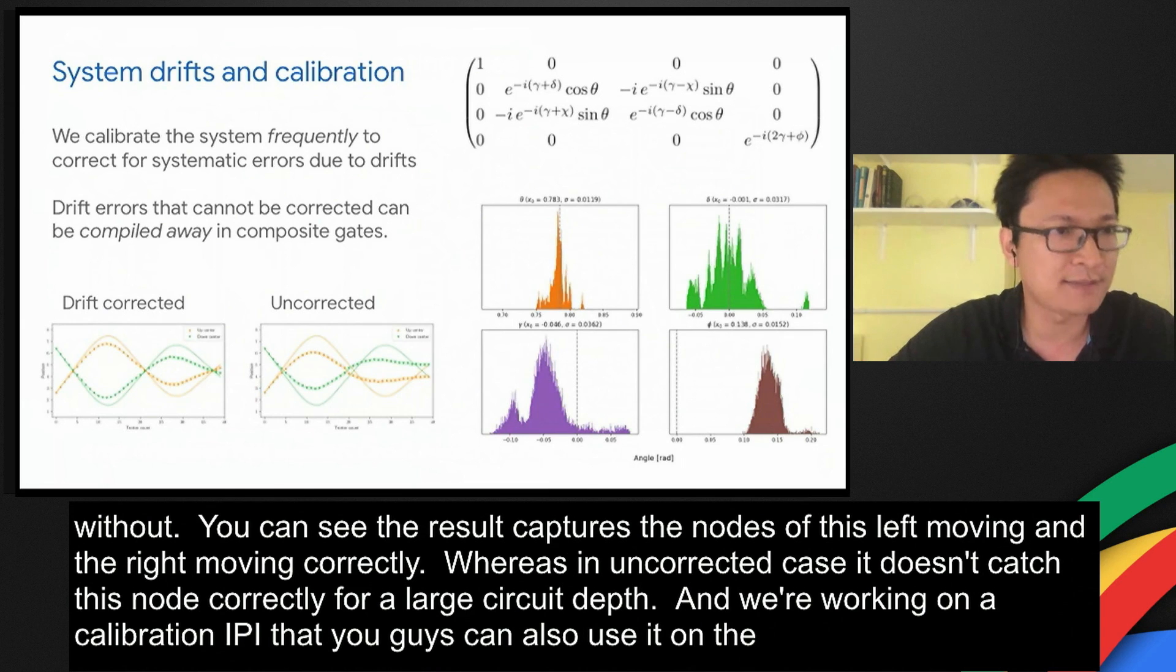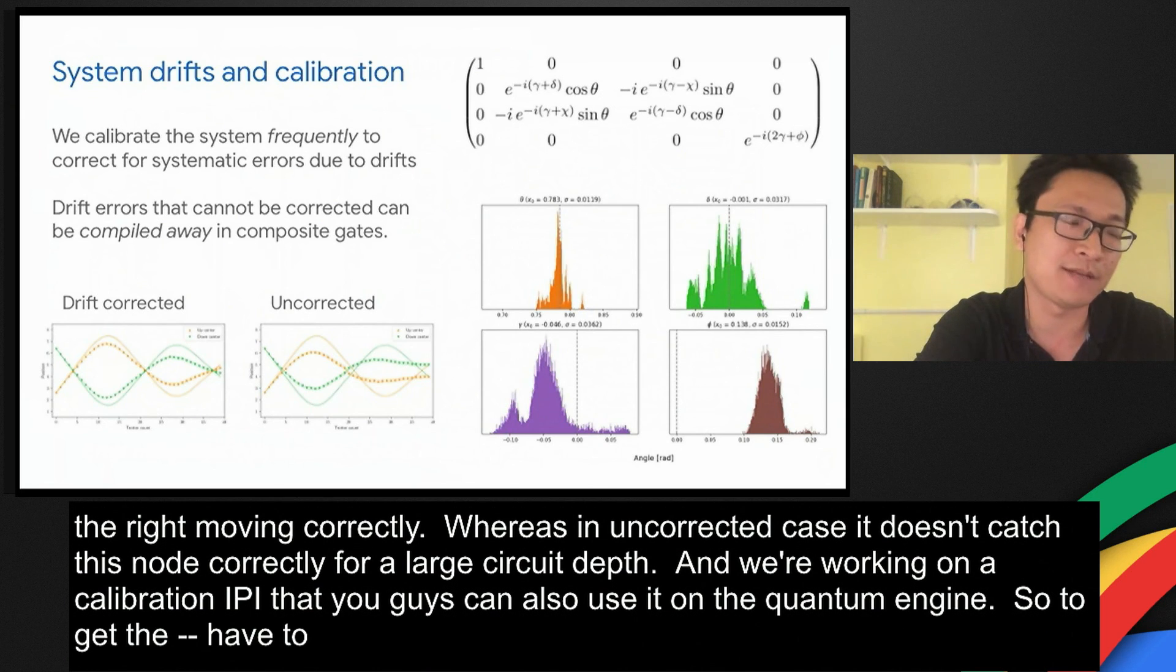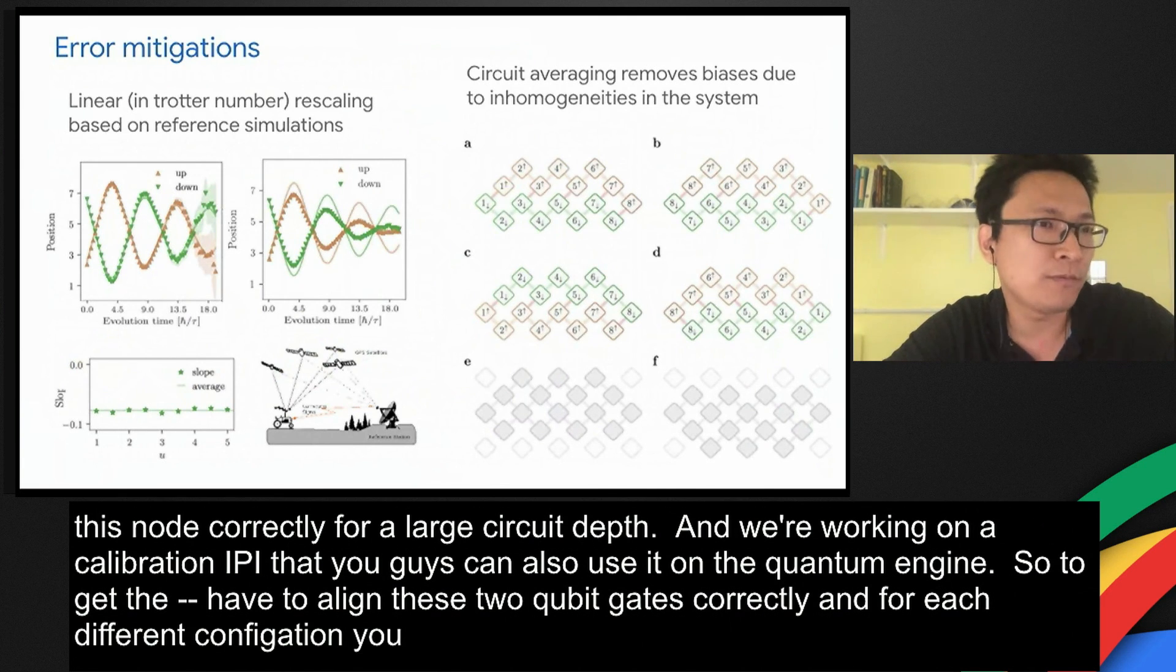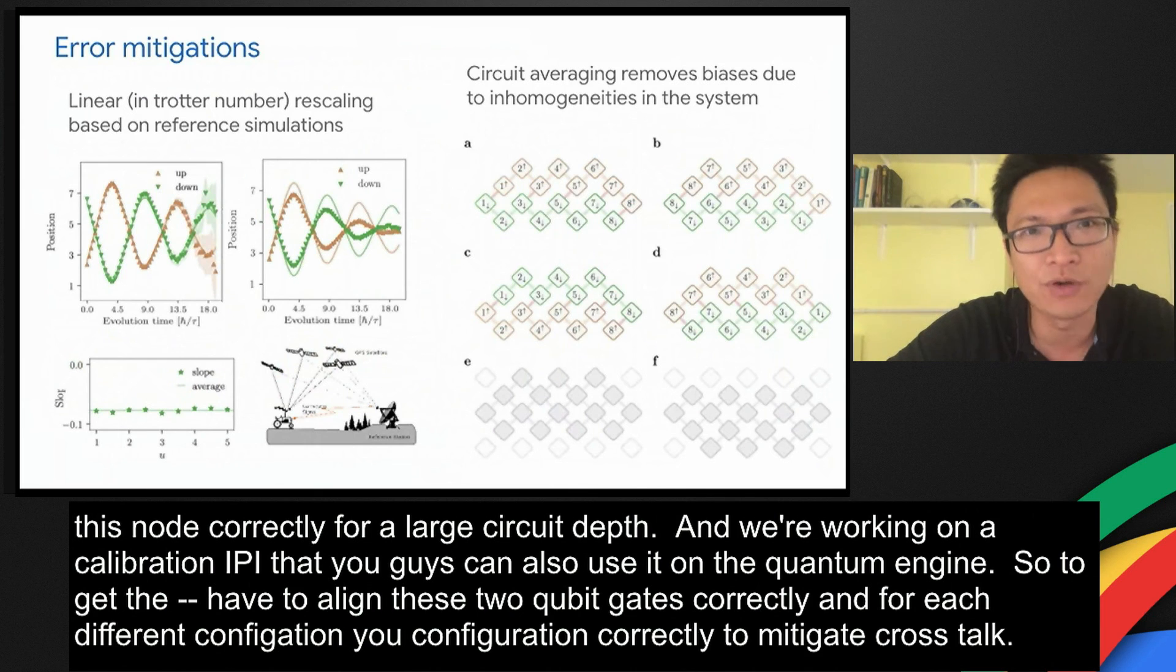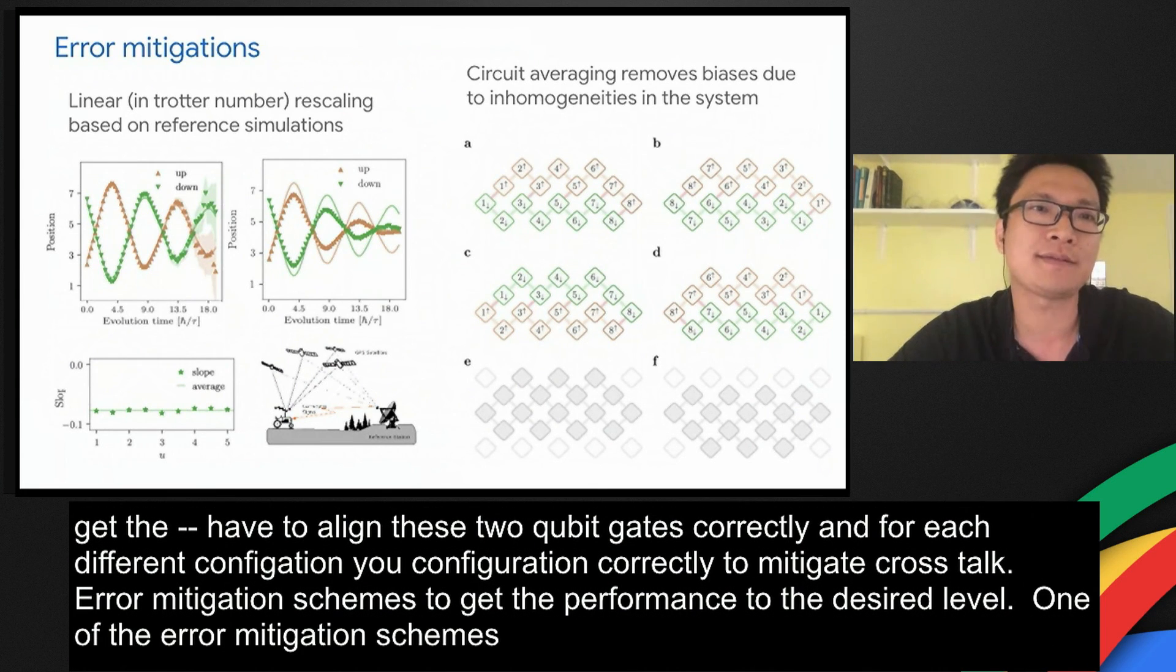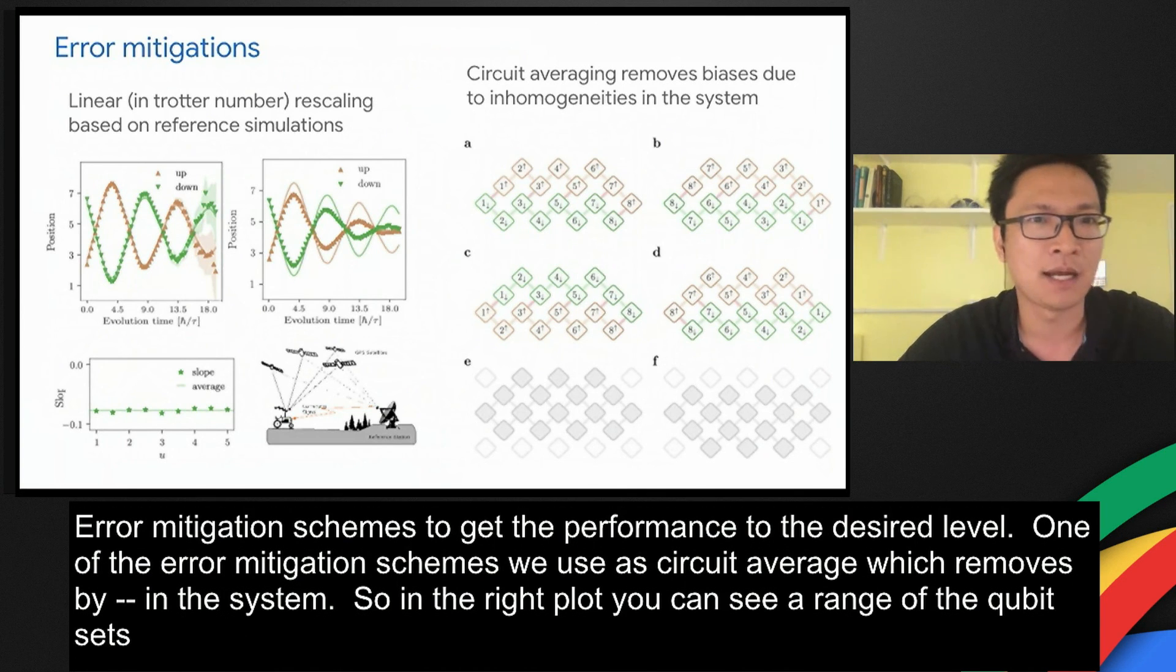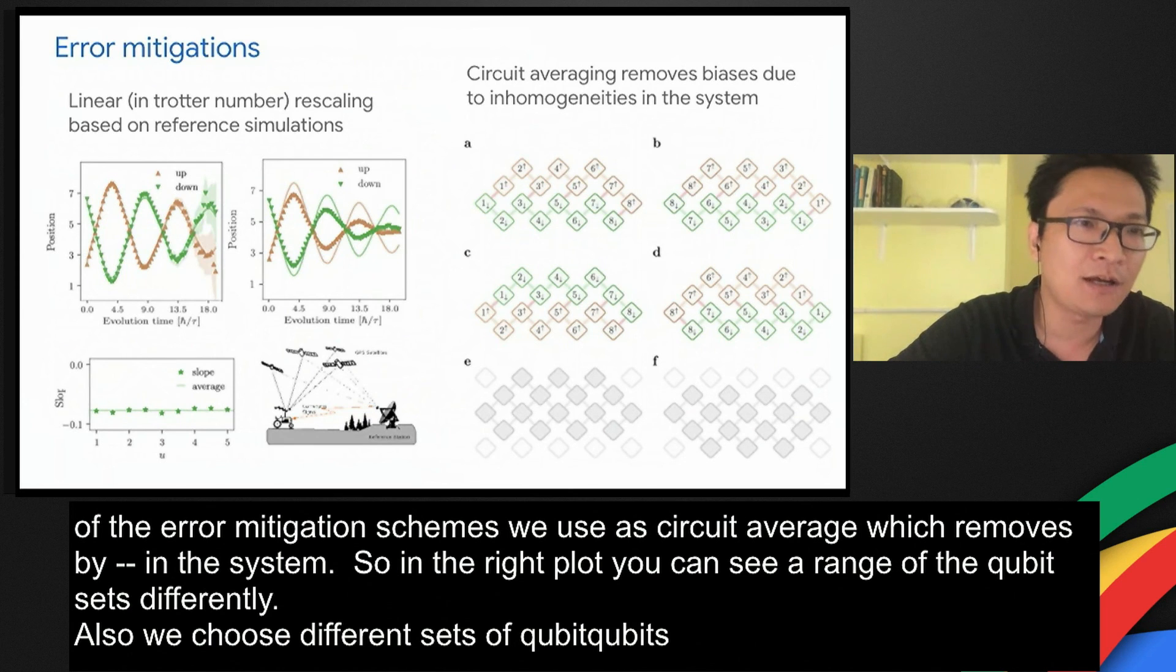To get the desired result, you have to align these two qubit gates correctly. For each different configuration of two qubit gates, you calibrate it independently to mitigate crosstalks. We've used some error mitigation schemes to get the performance to the desired level. One of the error mitigation schemes we use is circuit averaging, which removes biases due to the inhomogeneities in the system. In the right plot, you can see we arrange the qubit sets differently. Also, we choose different sets of qubits on the Sycamore-23 chip to make it happen.